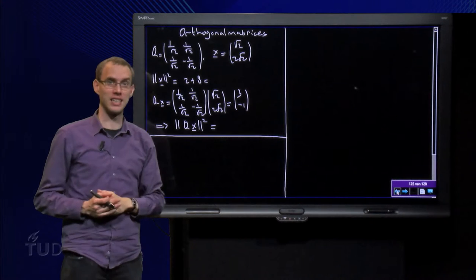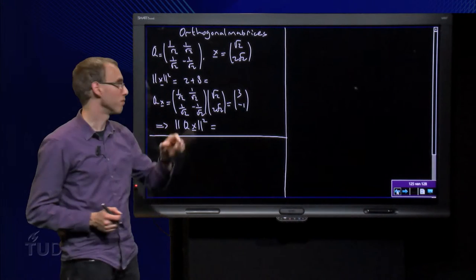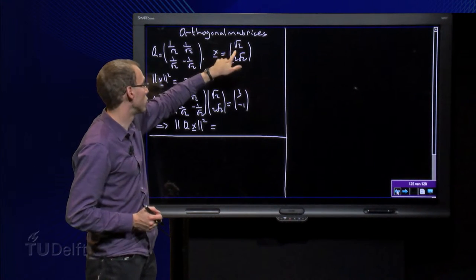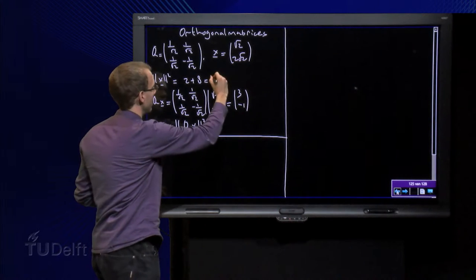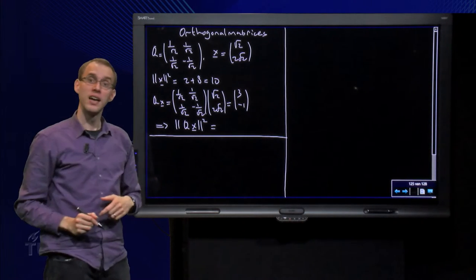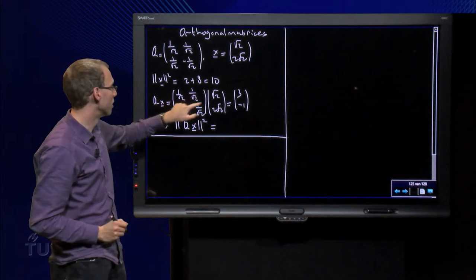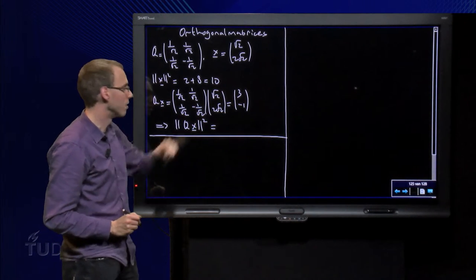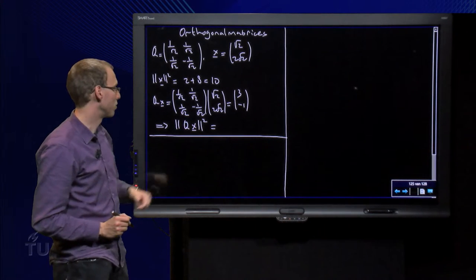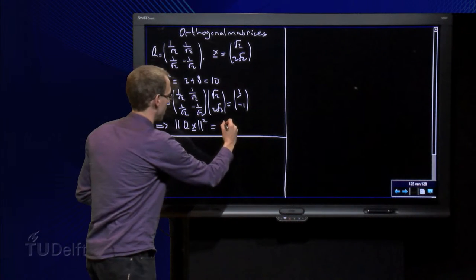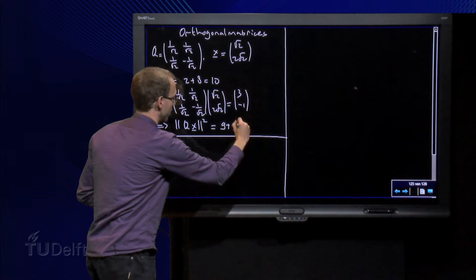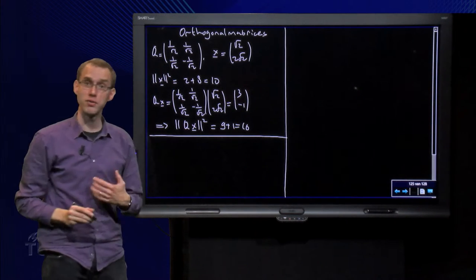Then we take the vector x. Let's compute the length of x - the length squared equals 2 plus 8 equals 10. And then we compute Q times x. Q times x equals 3 minus 1, and we can compute the length squared equals 9 plus 1 equals 10 as well.